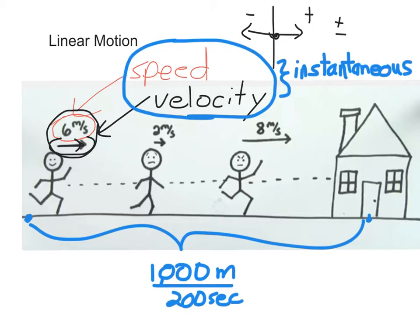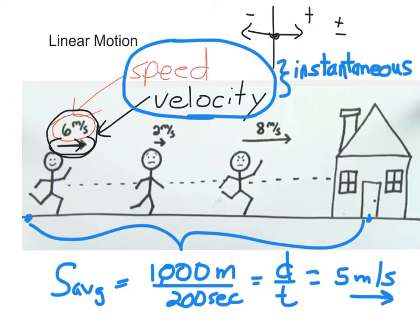If that's the case, I can calculate the average speed, because average speed is equal to the total distance you travel divided by the total amount of time that it takes to do it. So 1,000 divided by 200 is going to give me 5 meters per second. That is my average speed, and I was traveling to the right, so my average velocity is 5 meters per second to the right.